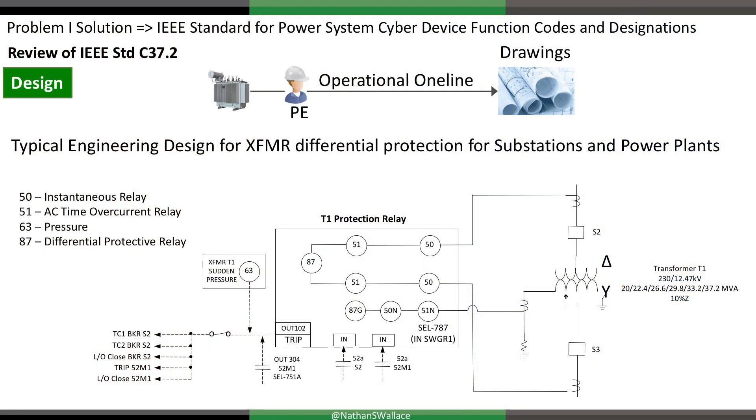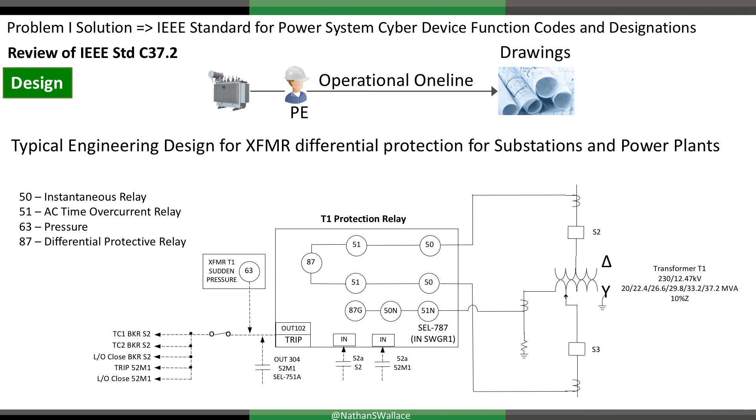Let me show you what I mean. This is an example of an operational one-line. The licensed professional engineer says, I want to protect this transformer. As a design engineer, I'd show my instrumentation transformers — CTs, PTs — and the signals coming in. You can see function code 50 for instantaneous relay, 51 for AC time overcurrent, and 87 for differential. There's a differential calculation — if there is a differential, trip. So this is an input going into a black box; the syntax '87' represents the function being performed inside that black box, and the operation is a trip — trip the breaker. How can we mirror this with cyber?